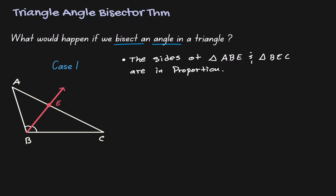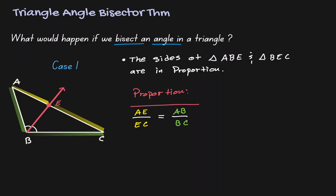We can define the proportion as follows. Those sides which are opposite of the congruent angles — which in this case would be AE and EC — will be equivalent to the sides of the original triangle, which in this case are AB and BC. The fraction on the left is the ratio among the sides opposite of the congruent angles, and the fraction on the right represents the sides of the original triangle.